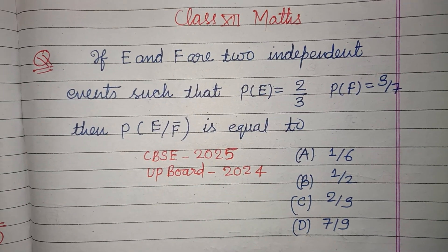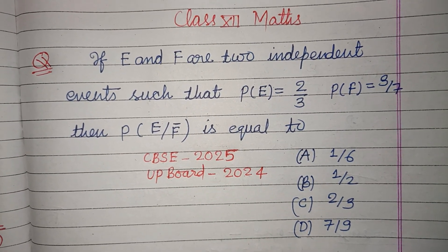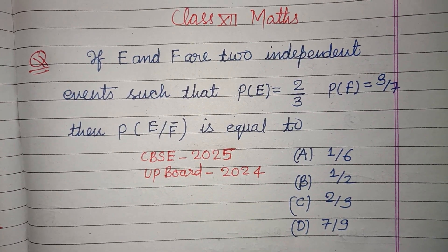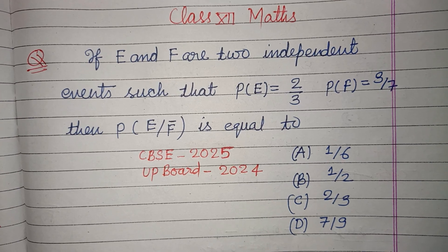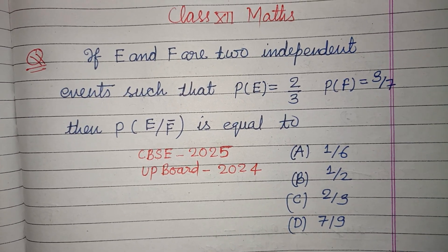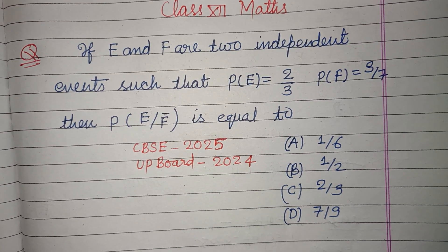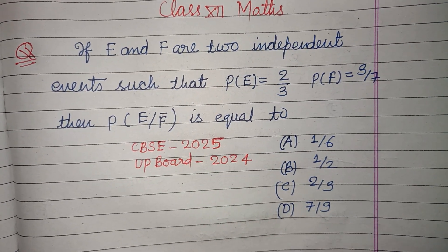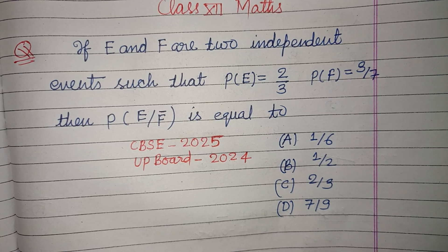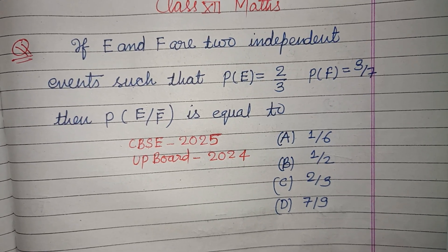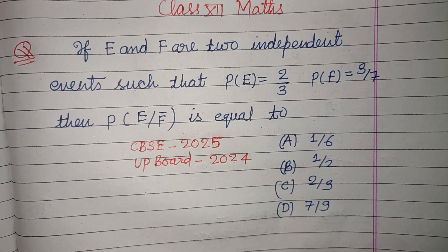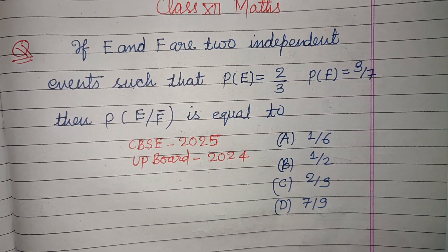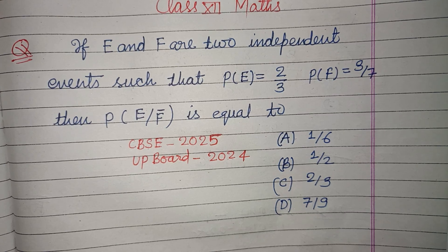Hello viewers, warm welcome to this YouTube channel. This question is from the CVSC board exam 2025. If E and F are two independent events such that P(E) = 2/3 and P(F) = 3/7,